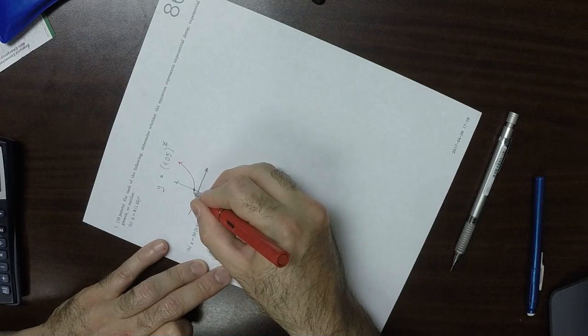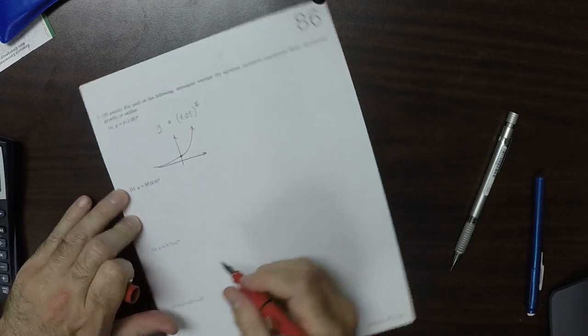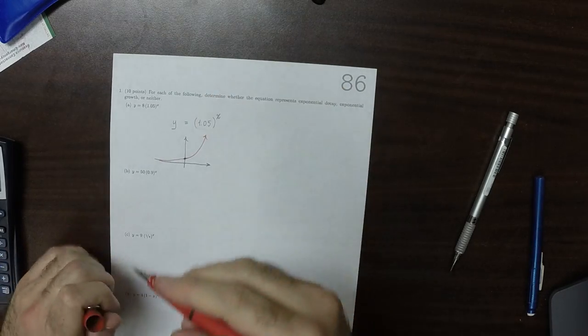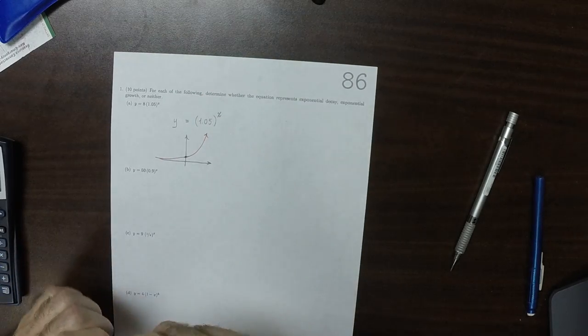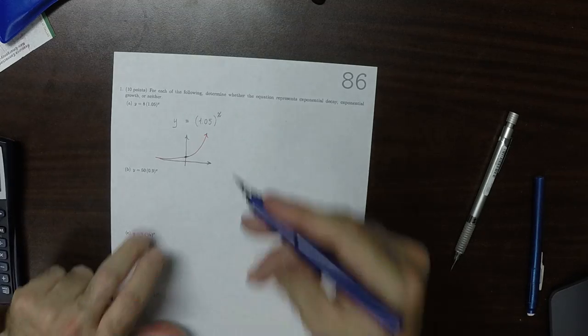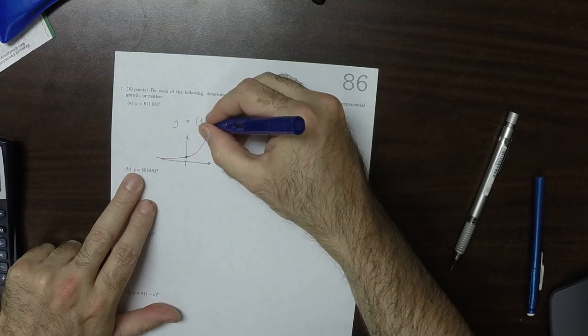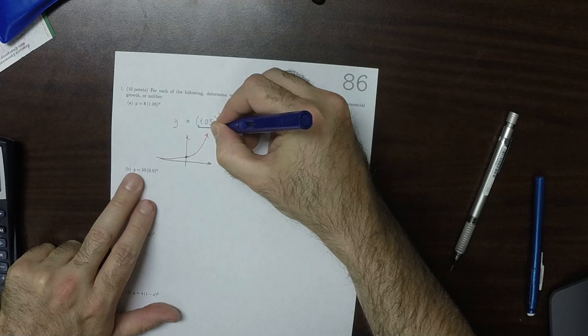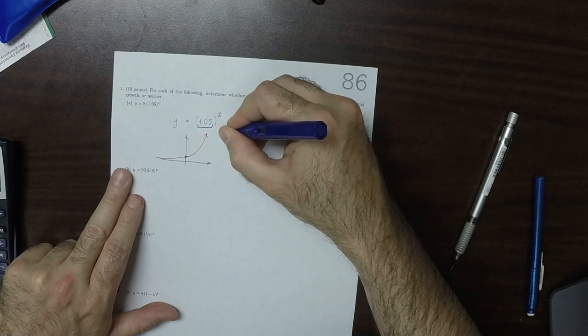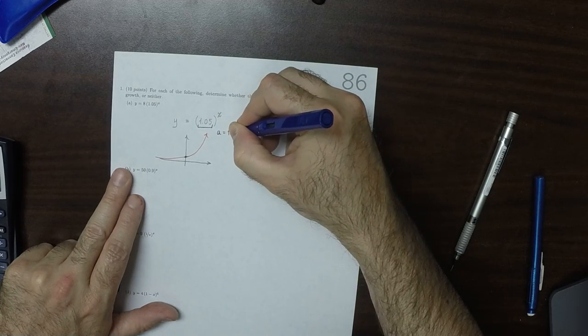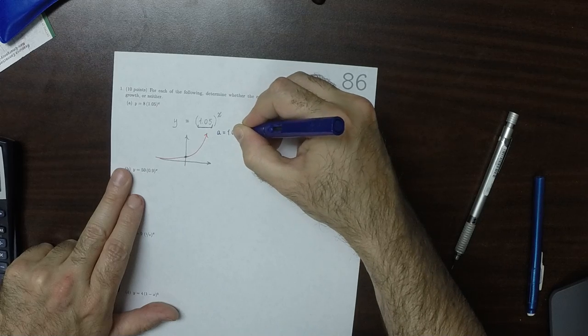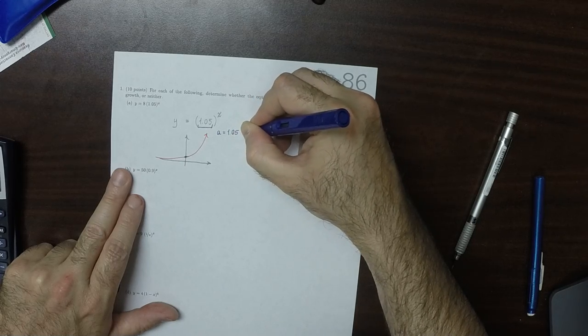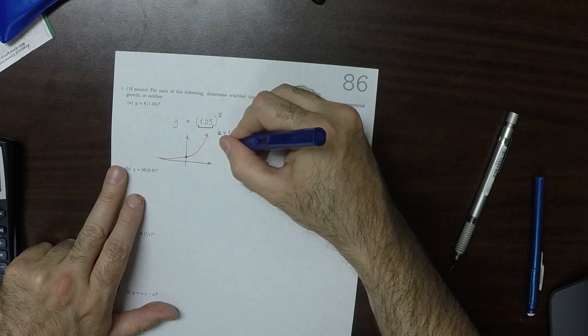This will be exponentially increasing, like this. Because 1.05, a is 1.05, which is more than 1, so this is exponential growth.